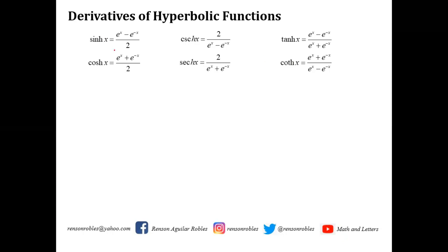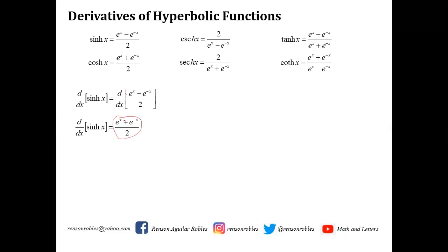For the derivative of sinh(x), we differentiate (e^x - e^(-x))/2. Using derivatives of exponential functions, the derivative of e^x is e^x and the derivative of e^(-x) is -e^(-x). Therefore we get (e^x + e^(-x))/2, which is cosh(x). So the derivative of sinh(x) is equal to cosh(x).